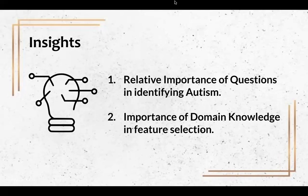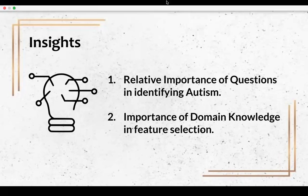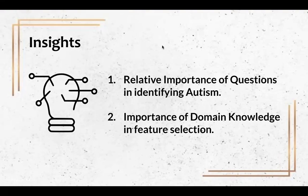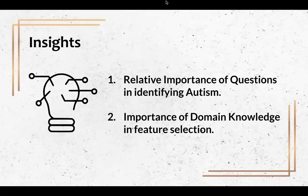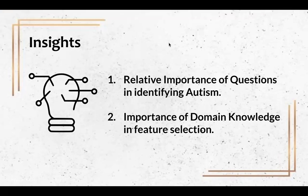This also made us recognise the need for domain knowledge when carrying out feature selection. There are a few questions that serve a purpose in capturing the edge cases on the autism spectrum despite not being ranked important. This is why we decided on a high F1 score of 90%, so as to avoid missing out on those edge cases.